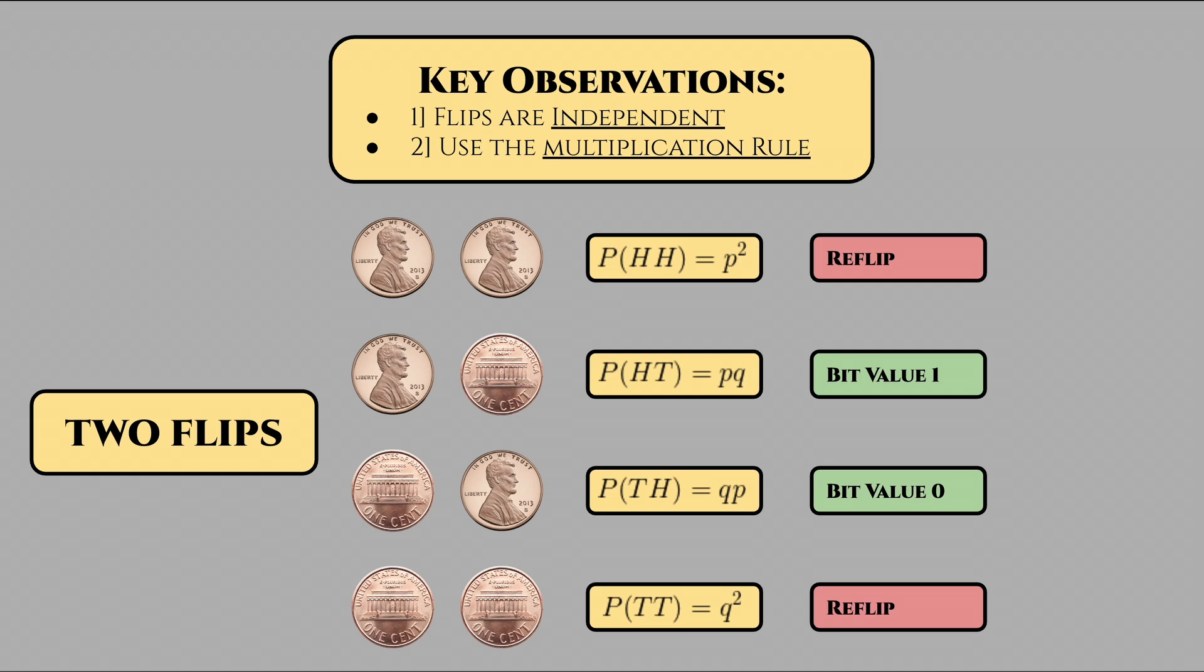After all, if someone did decide to use lightning storms as a baseline model to generate flips for bits, they might not get to generate very many bits before the storm fizzles out. Well, our current method is just throw out what we call bad flips, scenarios where we got heads-heads or tails-tails. This is obviously inefficient because there could be hypothetical scenarios where we're just constantly flipping but never actually using the information we receive. What if we reuse these?